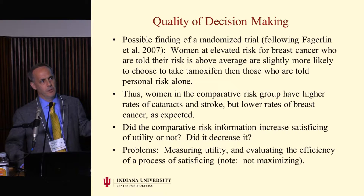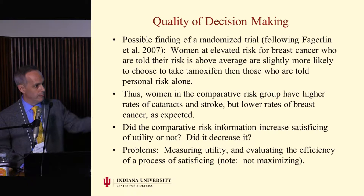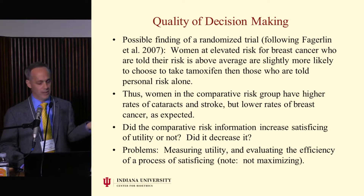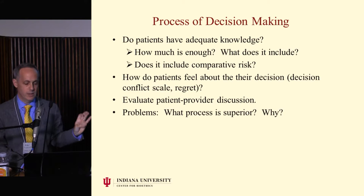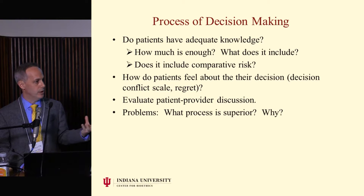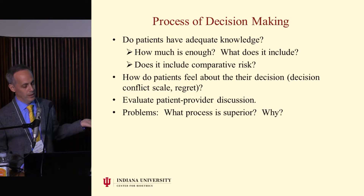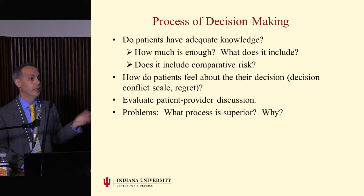Measuring utility is almost impossible anyway. Evaluating the efficiency of satisficing is really difficult. You could just measure the process of decision making — maybe whether people have adequate information. But then you have other questions: how much is enough, and does it include comparative risk? If you're going to see whether people have adequate information, you're actually begging the question either way. You might ask how people feel about their decision, but people might feel great about horrible decisions. You might evaluate the patient-provider discussion, but it's really hard to come to any clear conclusion.